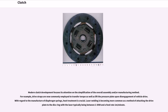Modern clutch development focuses on simplification of the overall assembly and/or manufacturing method. For example, drive straps are now commonly employed to transfer torque as well as lift the pressure plate upon disengagement of vehicle drive. With regard to the manufacture of diaphragm springs, heat treatment is crucial. Laser welding is becoming more common as a method of attaching the drive plate to the disc ring, with the laser typically being between 2–3 kW and a feed rate of 1 meter per minute.